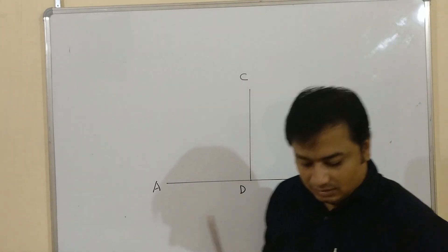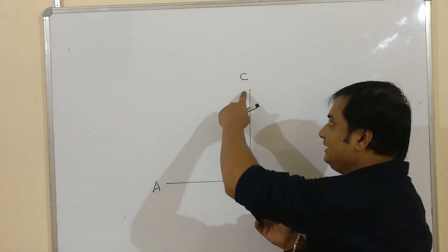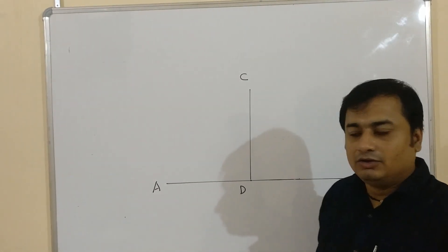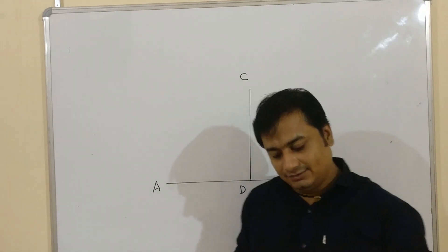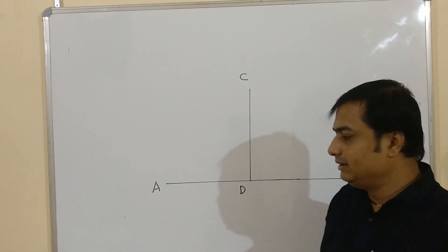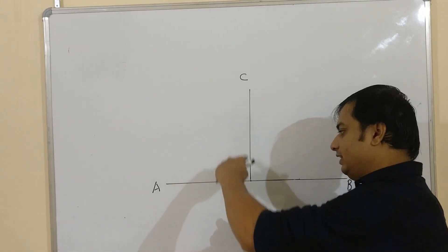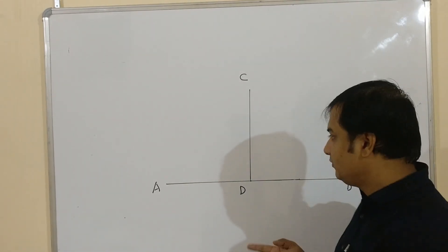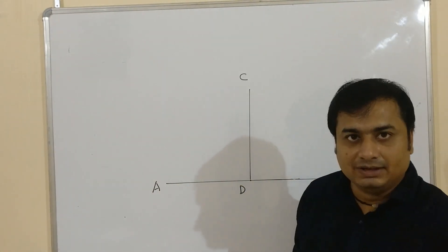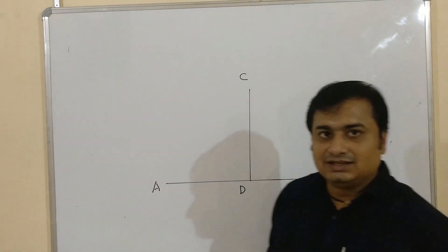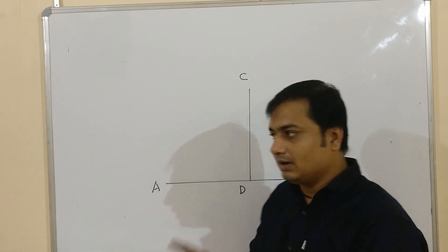Now, in the rectangle method of parabola, the complete CD should be above AB. You have to plot the vertical line CD of length 50 mm entirely above the AB line. In the ellipse method we did 25 above and 25 below, but in the case of parabola we keep the complete CD of 50 mm above AB. The next step, as the method is called rectangle method, is to complete the rectangle.